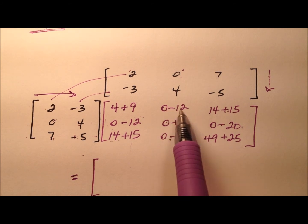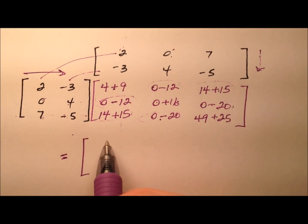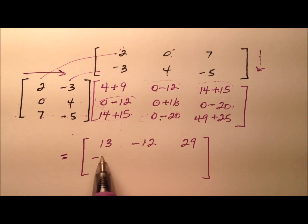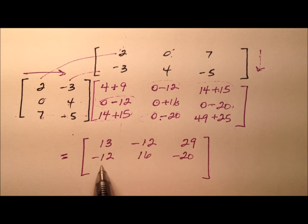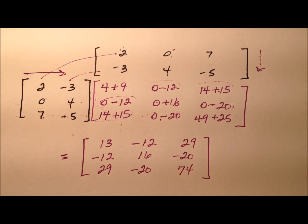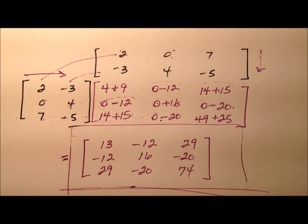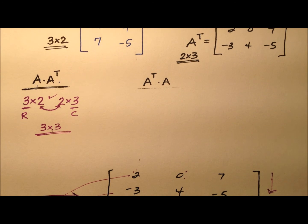There's also symmetry: we have zero minus twelve, fourteen and fifteen, and zero minus twenty appearing in both symmetric locations. Finishing the entries: four plus nine is thirteen; we have negative twelve and twenty-nine; coming across is that negative twelve again with sixteen and negative twenty; and twenty-nine again with negative twenty and seventy-four. So this three by three is our product matrix for A times the transpose of A.